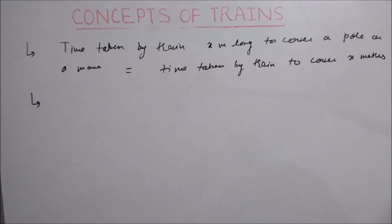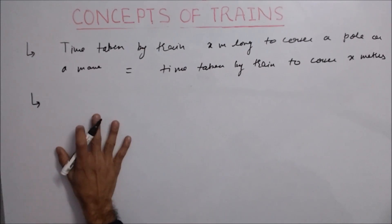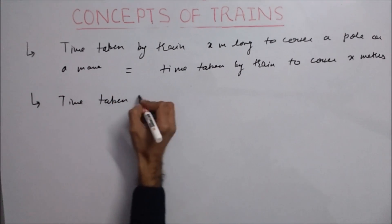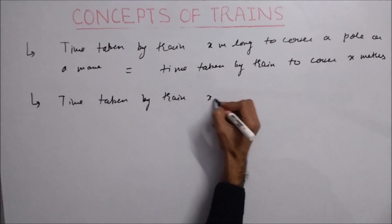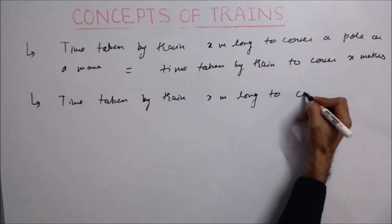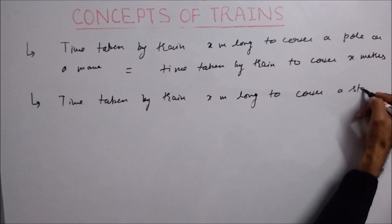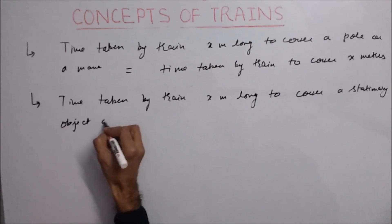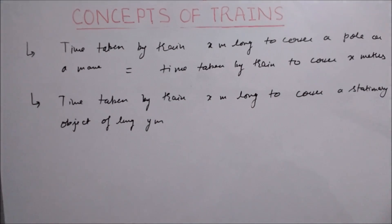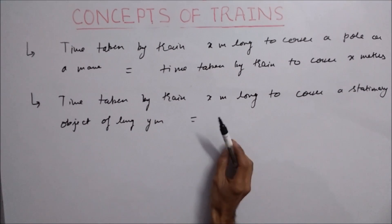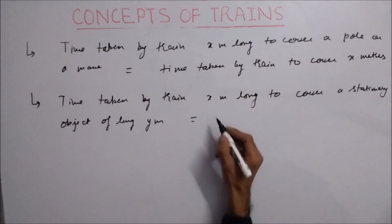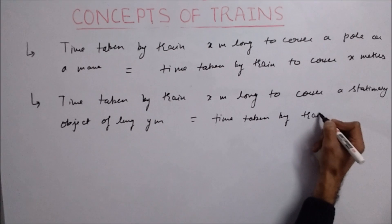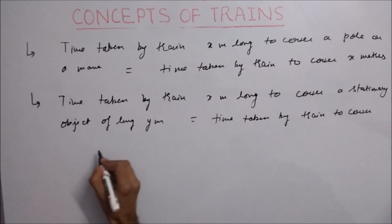The next type of question is the time taken by a train to cross a stationary object of a certain length. Let a train x meters long cross a stationary object of length y meters. This time will be equal to the time taken by the train to cover x plus y meters.